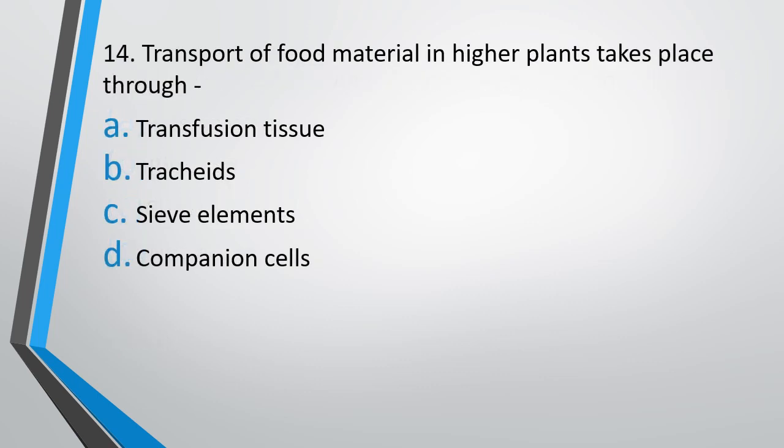Question number 14. Transport of food material in higher plants takes place through transfusion tissues, tracheids, sieve elements, or companion cells. Transport of food material in higher plants takes place through the correct answer, option C, sieve elements.